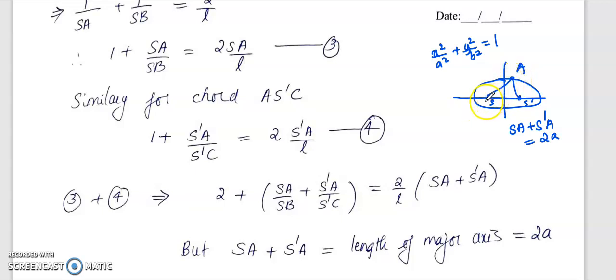If the sum of the distances from two fixed points must be a constant, so SA plus S'A is constant. Now if it is in the equation, that will be the length of the major axis.